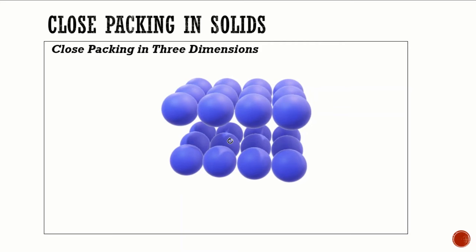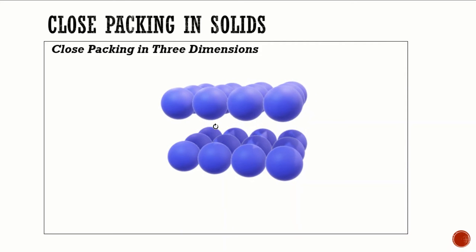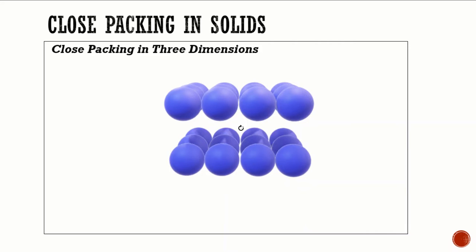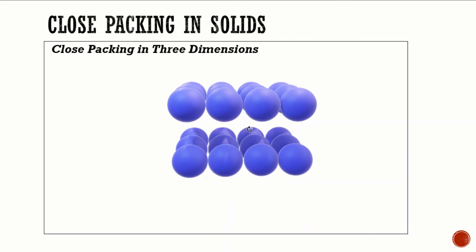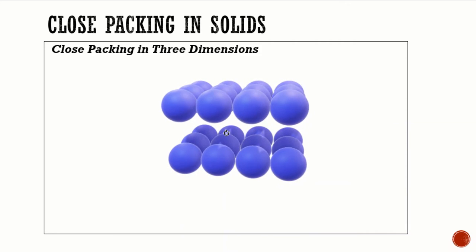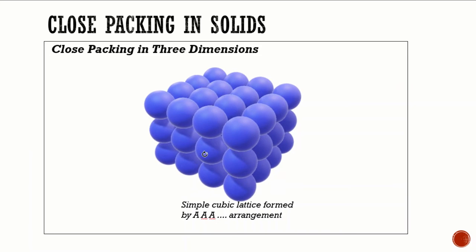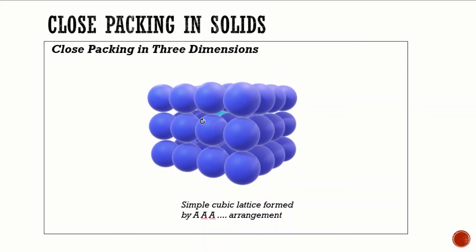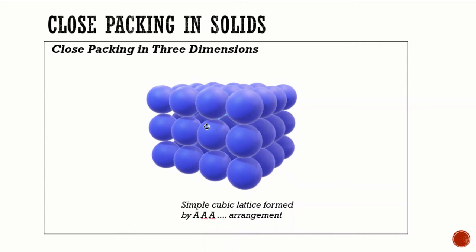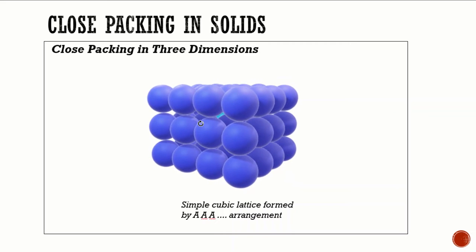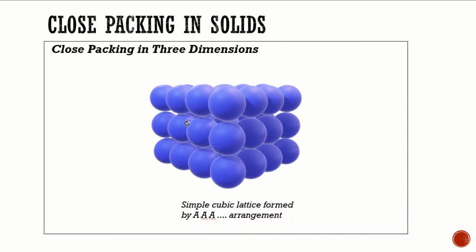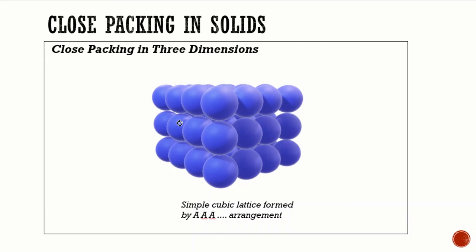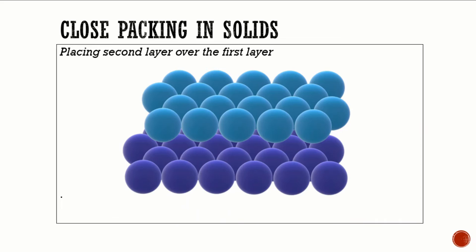When considering close packing in three dimensions, close-packed structures are obtained by stacking two-dimensional layers one above the other. Starting from a square close-packed layer, the second layer and all further layers are built such that they are aligned both horizontally and vertically. If we call the first layer A-type, the resulting lattice is of AAA type. However, a more efficient packing is given by hexagonal close packing.